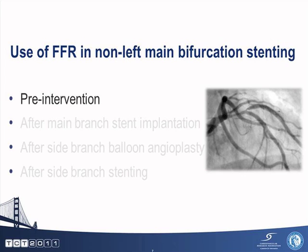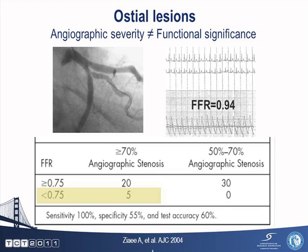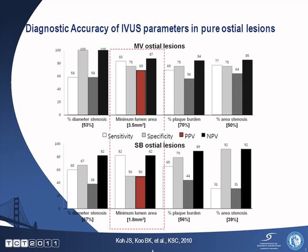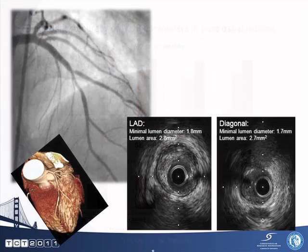Today I'd like to talk about how we can use FFR in non-left main bifurcation stenting, starting with pre-intervention cases. As shown by Dr. Austin, there is a discrepancy between angiography and the functional significance of lesions at the ostial lesion. In this study, among lesions with more than 70% stenosis, only 20% had functional significance. When comparing IVUS and FFR in pure ostial lesions, the best cutoff value for functional significance was 3.5 square millimeters in the main branch and 1.8 square millimeters in the side branch. But the positive predictive value of these numbers is very low — main branch 69%, but the side branch it's 50%, exactly the same as flipping a coin.